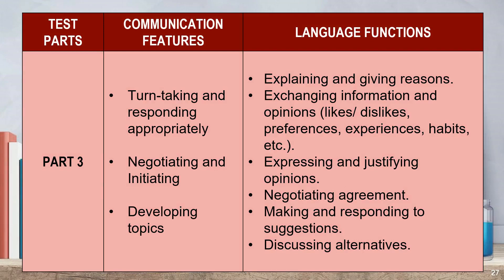Finally, in Part 3, candidates will need to take turns and respond appropriately by negotiating, initiating, or developing ideas based on the given topic. The language functions expected from candidates in Part 3 are explaining and giving reasons, exchanging information and opinions such as likes, dislikes, preferences, experiences, habits, and so on. Other language functions expected are expressing and justifying opinions, negotiating agreement, making and responding to suggestions, or discussing about alternatives. These are the output features expected from the candidates during the test for all three parts — try to understand them well and do your best.